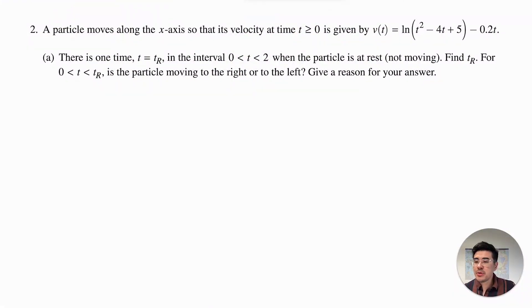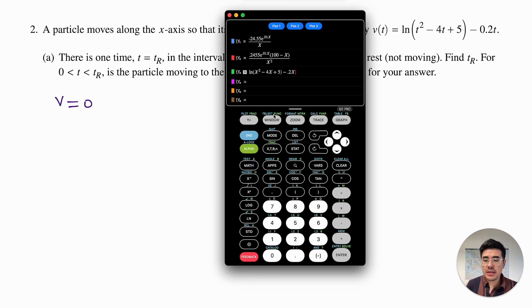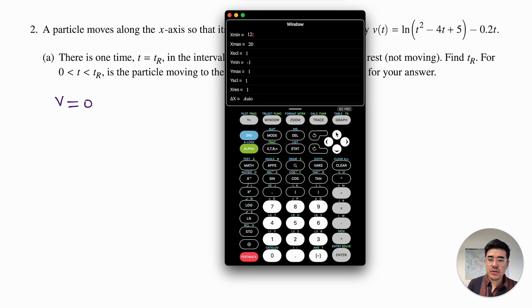Question two is one about particle motion. We have a particle moving along the x-axis so that its velocity at time t equals zero is given by this function. Part A says there is a time on the interval zero to two when the particle is at rest or not moving. You got to remember that when a particle is not moving or at rest, we're looking for where its velocity is equal to zero. So I've gone ahead and plugged the graph into my calculator, but we're going to need to adjust our window. It says the particle is moving between zero and two seconds. Since we're looking for where the particle is at rest or where the velocity is zero, it's fine for me having my ymin at negative one and my ymax at one.